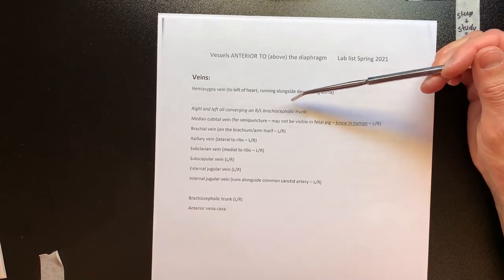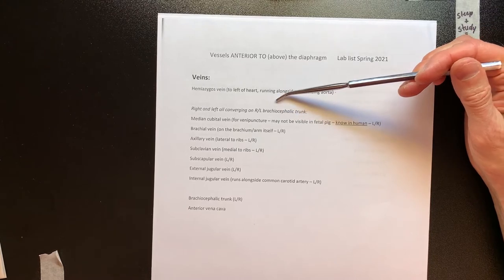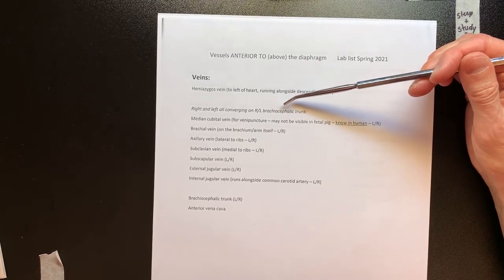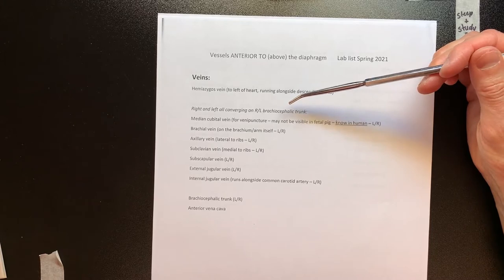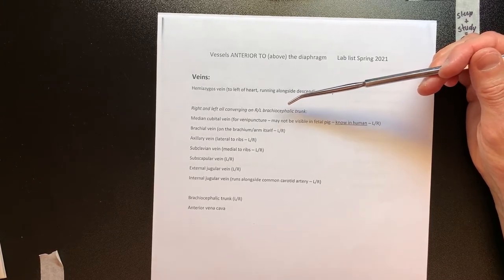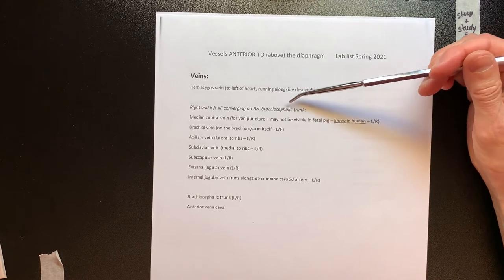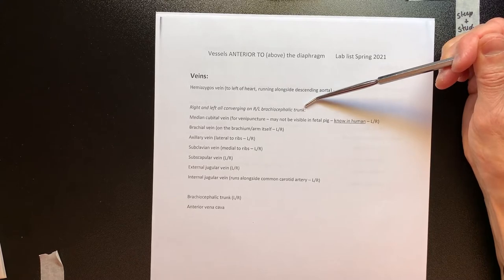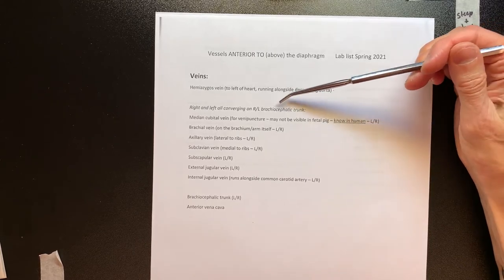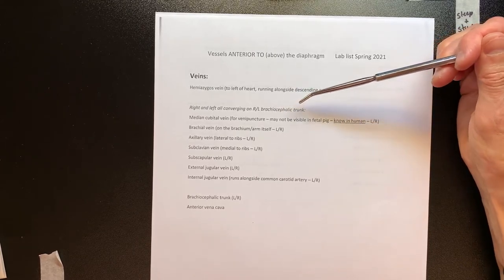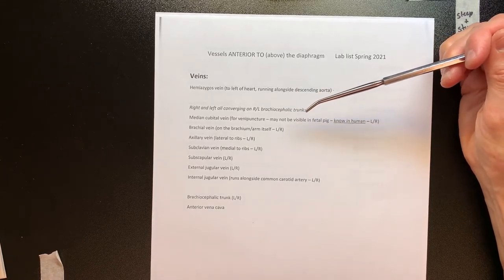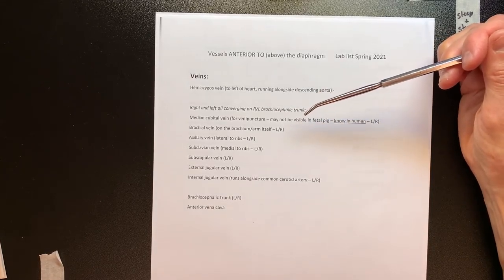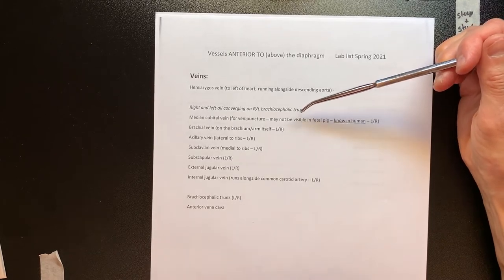Let's look at the word brachiocephalic. Brachio means arm — specifically the upper part of the arm, the brachium where the biceps and triceps are, as opposed to the forearm which is the antebrachium. Cephalic means head. So brachiocephalic just means arm-head trunk. The word trunk should remind you that this is going to branch off, like the trunk of a tree. You can call it the brachiocephalic vein, but calling it a trunk cues you during an exam that it has branches.